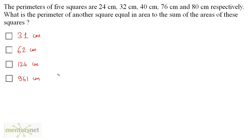The perimeters of 5 squares are 24 cm, 32 cm, 40 cm, 76 cm, and 80 cm respectively. What is the perimeter of another square equal in area to the sum of the areas of these 5 squares?